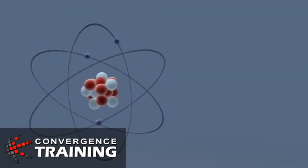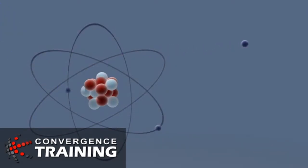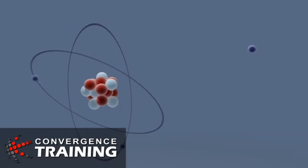Ionization is the process in which a charged portion of a molecule, usually an electron, is given enough energy to break away from the atom. This process changes the atomic structure of the molecule and results in the formation of two charged particles called ions.